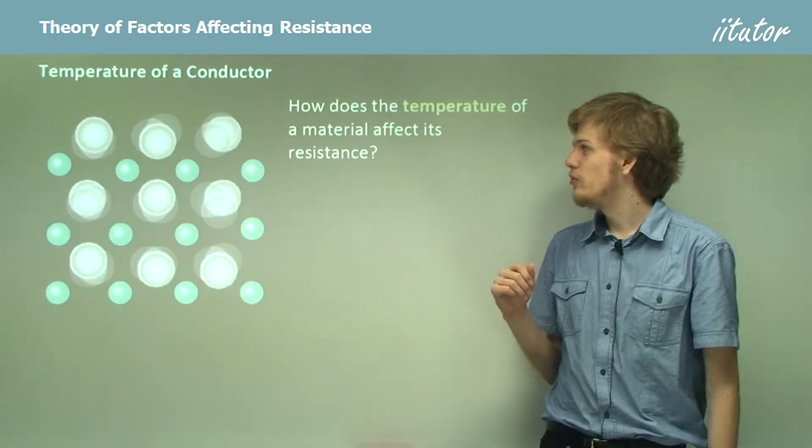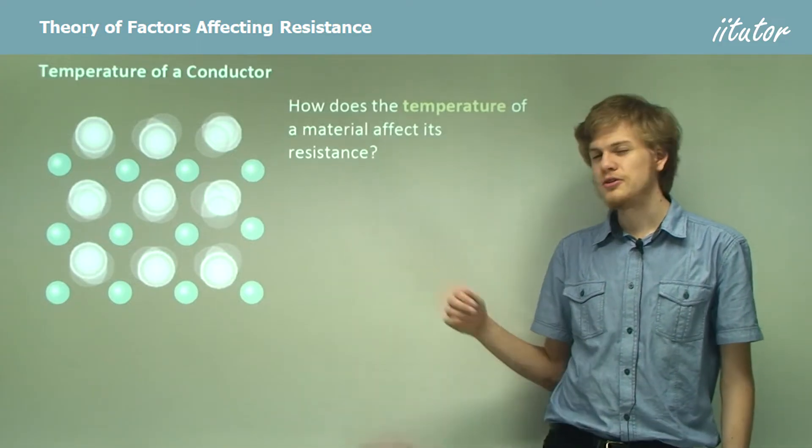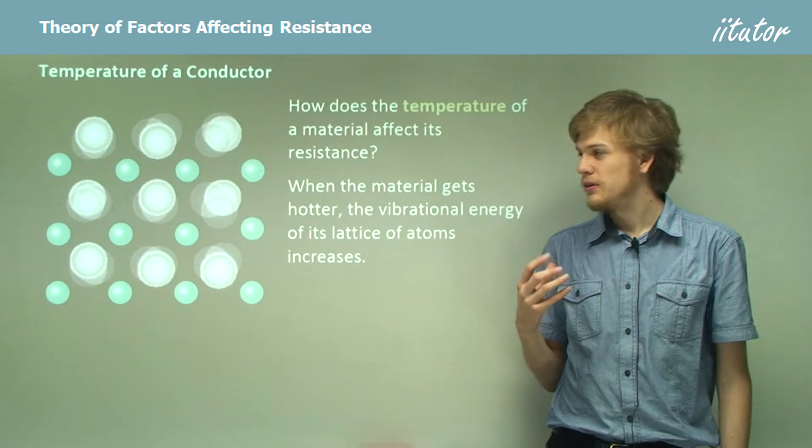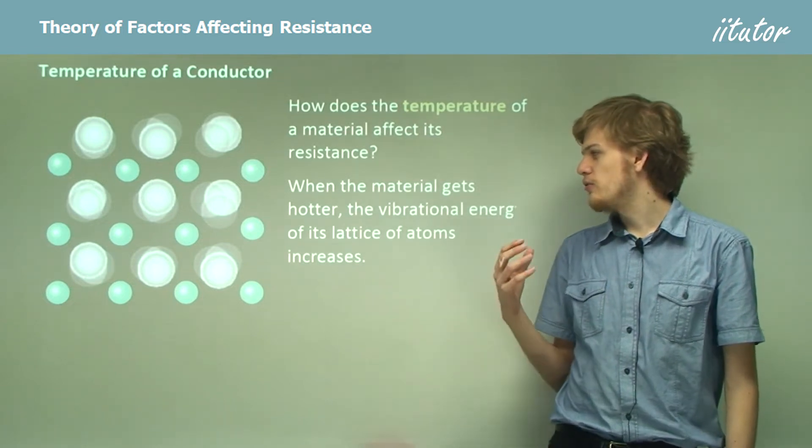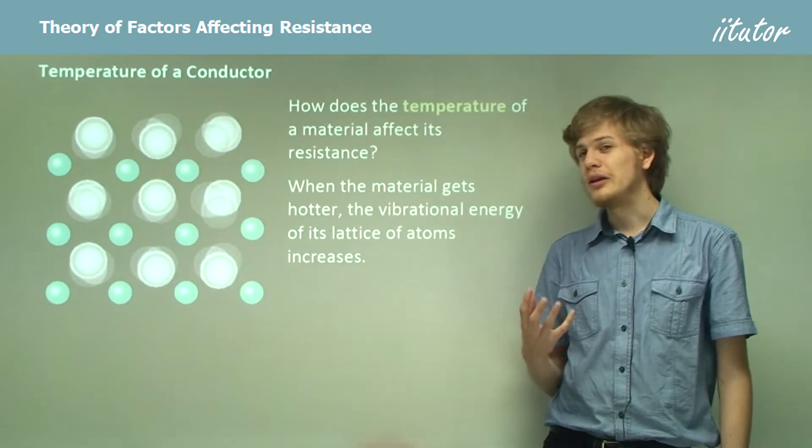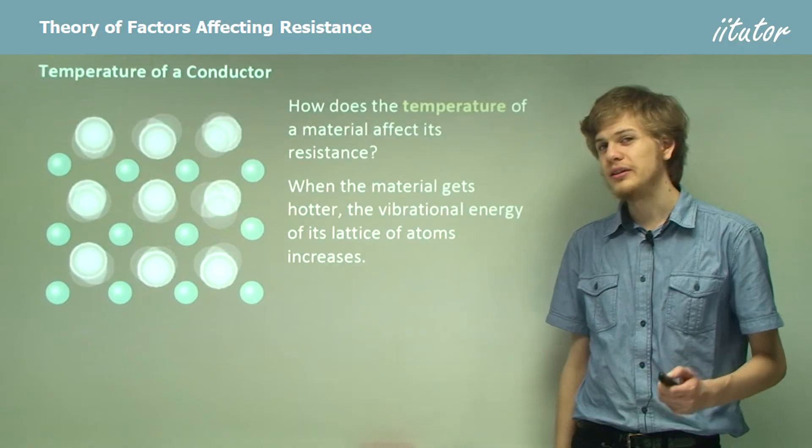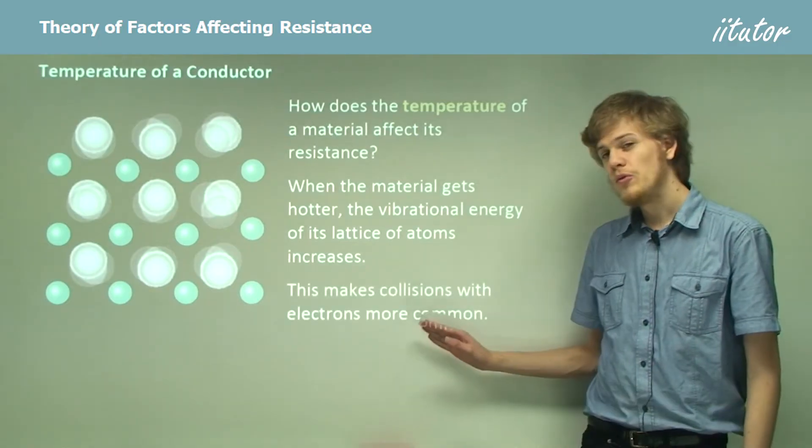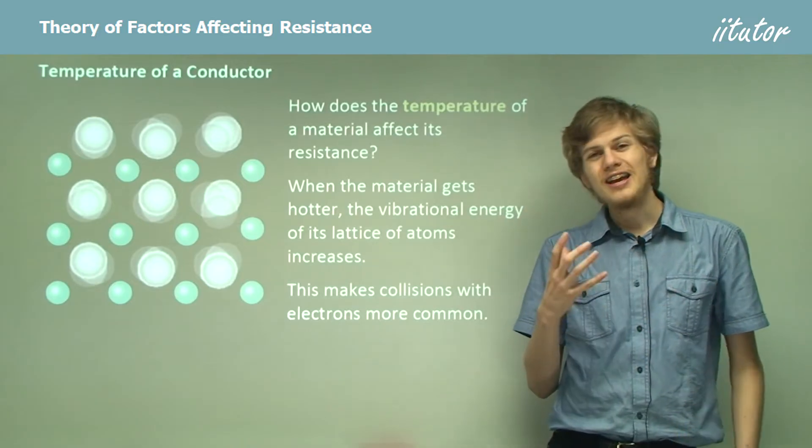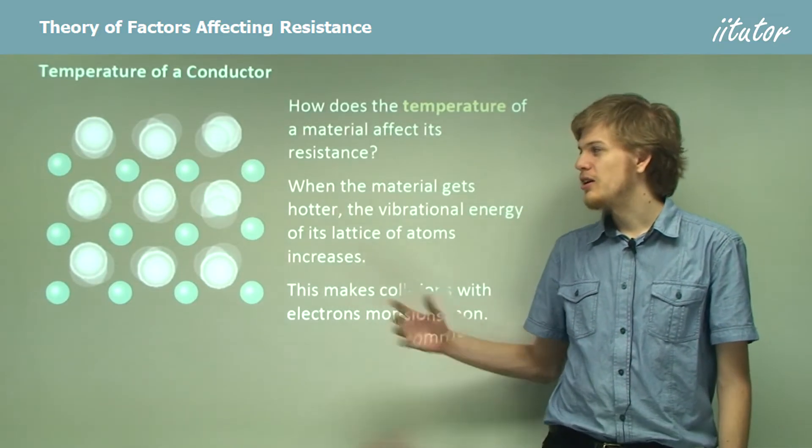How does the temperature of a material affect its resistance? Well we can see a hint in this picture over here. When the material gets very hot, the vibrational energy of its lattice of atoms, represented by the pink circles here, will increase. So we can see that these lattice atoms are jittering around very quickly in this diagram. And what this means is that if they're vibrating around more, it's easier for the electrons to bang into them, because it's like they're taking up more space.